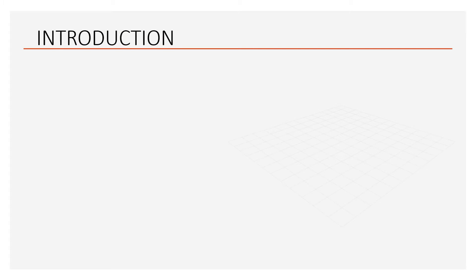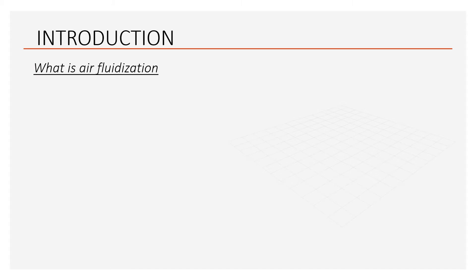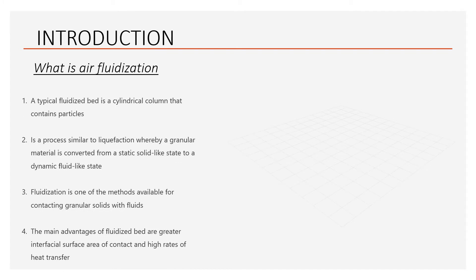Now I'm going to explain the introduction for air fluidization. Air fluidization is a typical fluidized bed, which is a cylindrical column that contains particles. This column is flowed through by a fluid — either gases or liquid. Air fluidization is a process similar to liquefaction, whereby a granular material is converted from a static solid-like state to a dynamic fluid-like state. Fluidization is also one of the methods available for contacting granular solids with fluids.